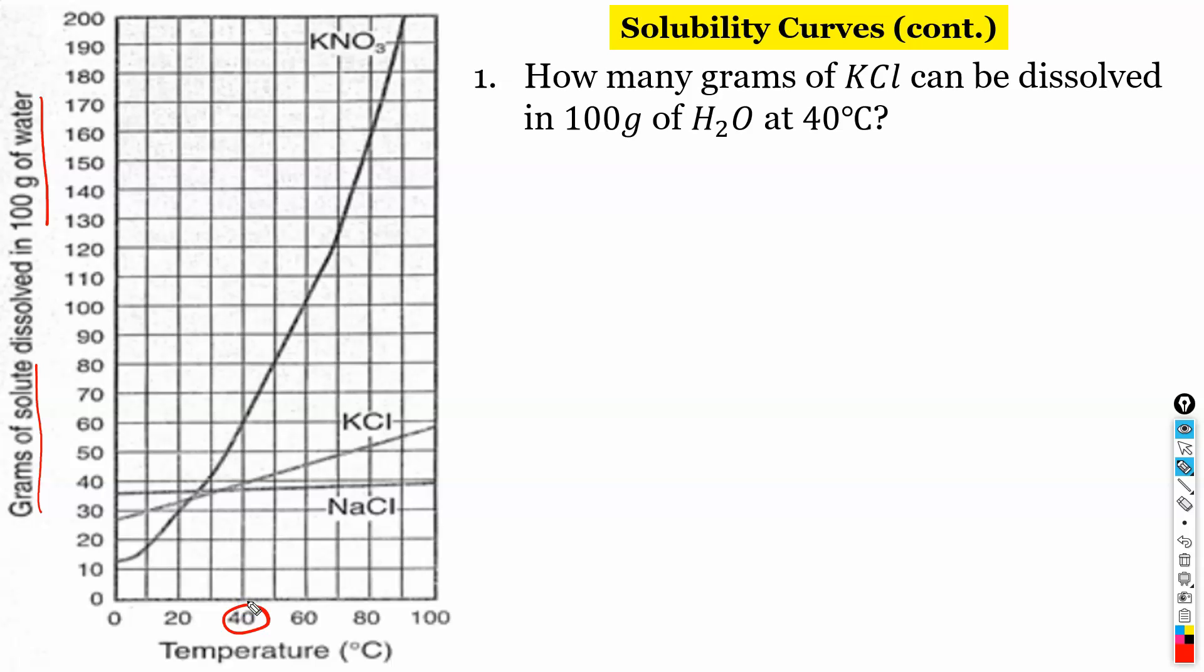So we have potassium chloride. Potassium chloride is this curve right here. Okay so how many grams of potassium chloride can be dissolved in 100 grams of H2O at 40 degrees? So 40 degrees we just kind of go up here and we'll just knock that over to the y-axis here. So we can hold 40 grams.